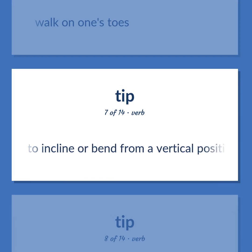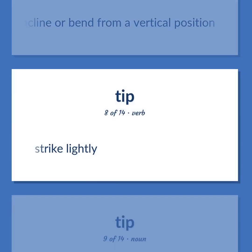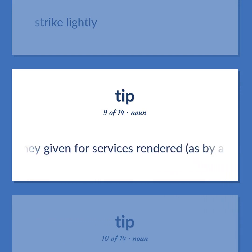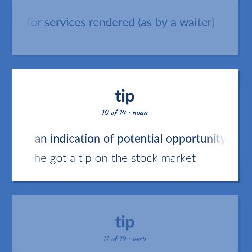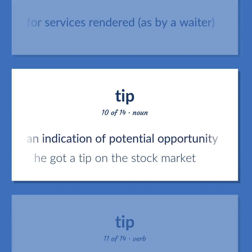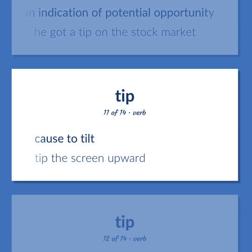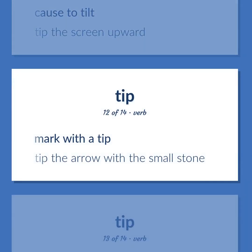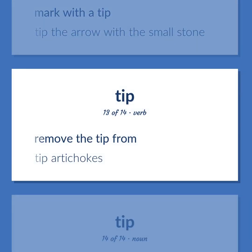Tip: To incline or bend from a vertical position. Strike lightly. A relatively small amount of money given for services rendered, as by a waiter. An indication of potential opportunity — he got a tip on the stock market. Cause to tilt — tip the screen upward. Mark with a tip — tip the arrow with the small stone. Remove the tip from — tip artichokes.